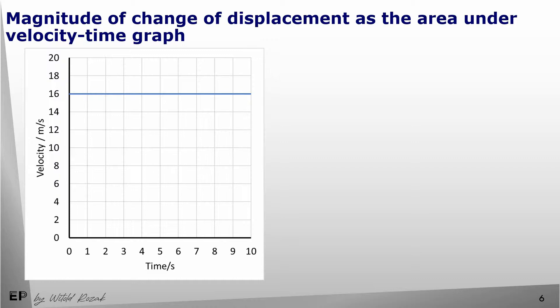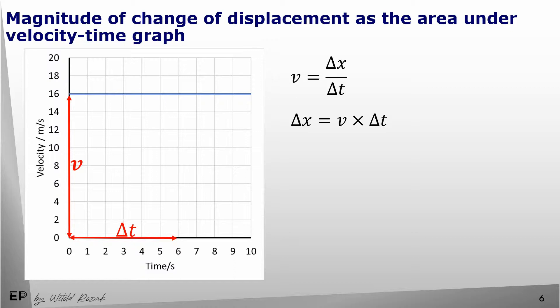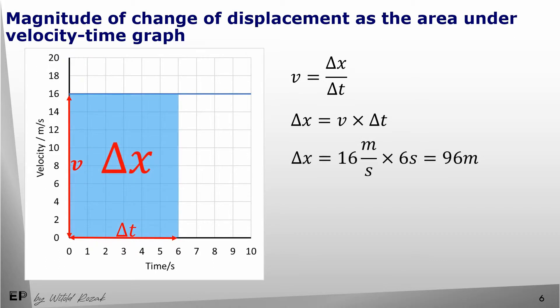Let's go back to uniform motion for a minute. In uniform motion, velocity is constant, as shown on this graph. Velocity was defined as the change in displacement divided by the change of time. If we rearrange this equation, we can see that change in displacement is equal to velocity multiplied by the change in time. Since velocity is on the y-axis and change of time is on the x-axis, multiplying velocity and time gives us the area under the velocity-time graph.